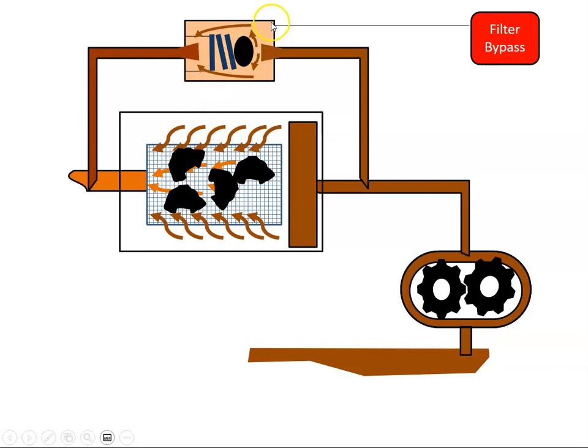There's normally a pressure sensor across this bypass valve. When the pressure is high enough to unseat the valve, the sensor will send a signal to the cockpit and that will illuminate the filter bypass.